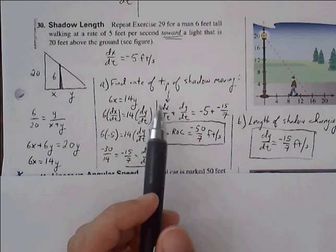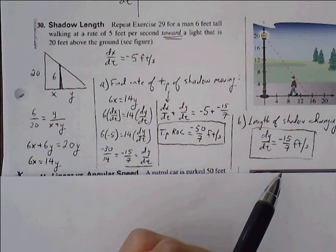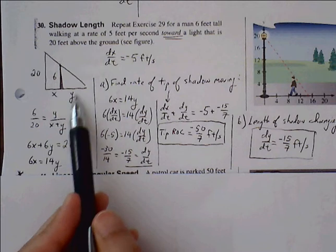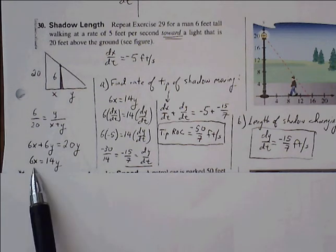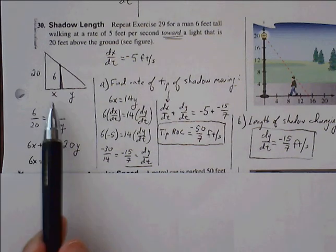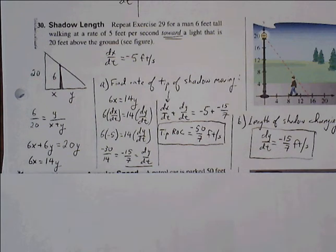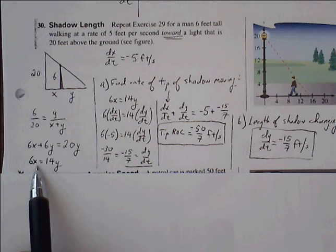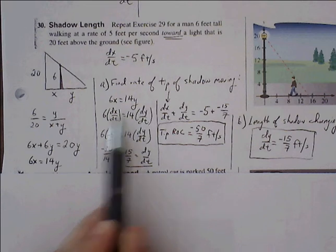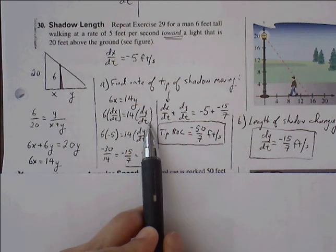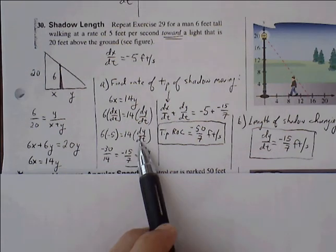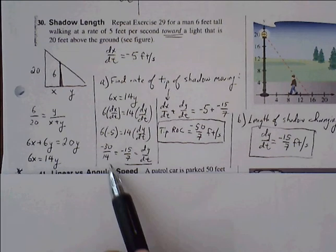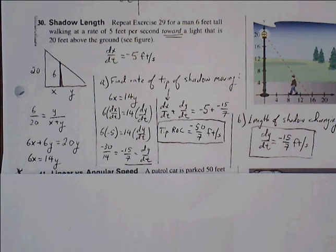For part a, we want to find the rate at which the tip of the shadow is moving. Starting from our similar triangle equation 6x = 14y, we differentiate: 6·(dx/dt) = 14·(dy/dt). Substituting dx/dt = −5 and solving for dy/dt by dividing both sides by 14, we get dy/dt = −30/14, which simplifies to −15/7 feet per second.